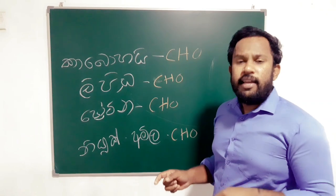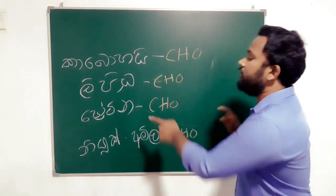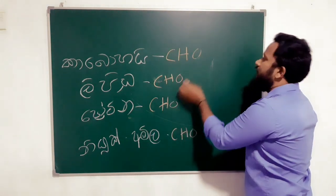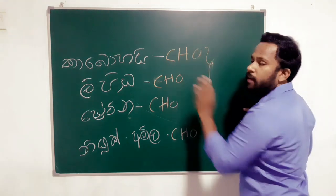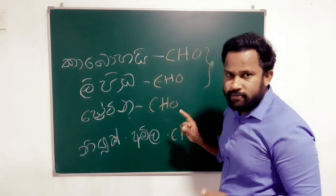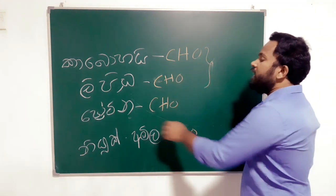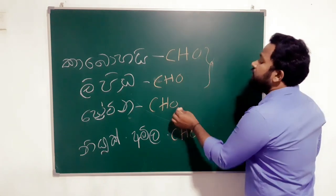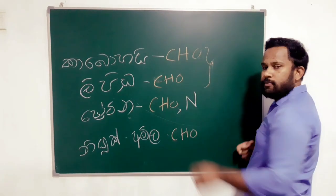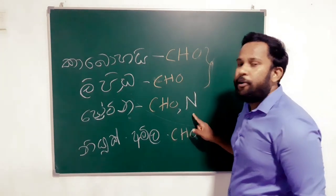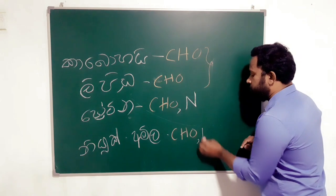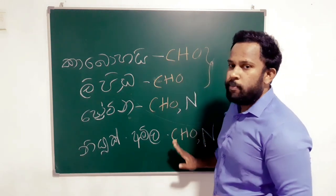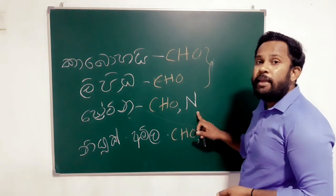For protein, what we're adding is nitrogen. We are doing the protein with CHO — this protein is CHO plus nitrogen. Our nitrogen is represented.